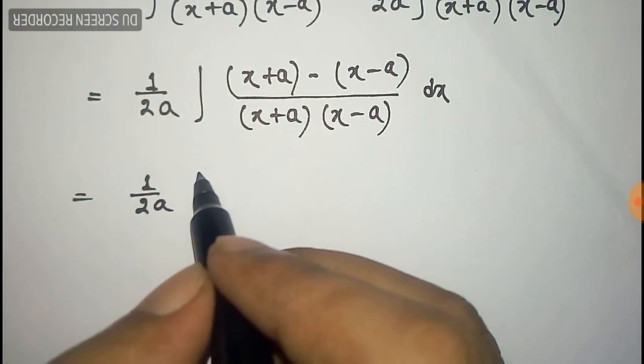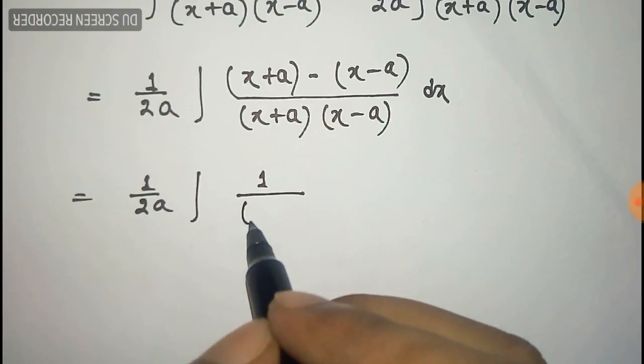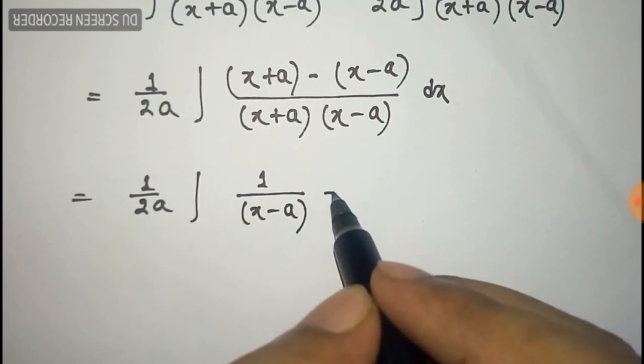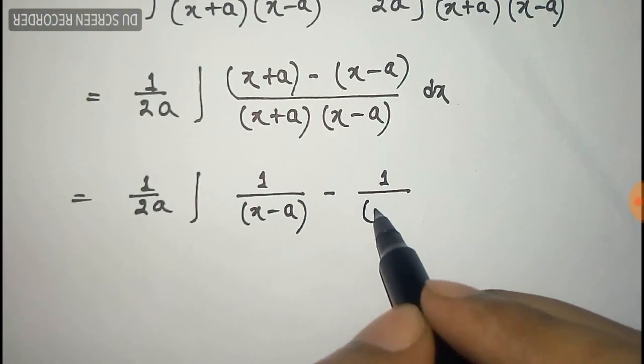Now we divide both parts with x plus a into x minus a, and after this it will be like one by x minus a minus one by x plus a.